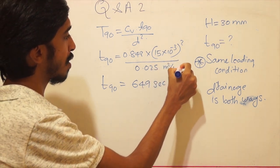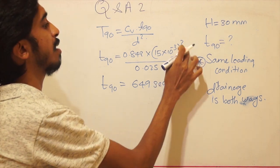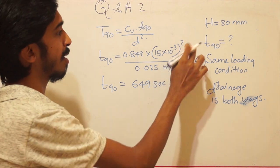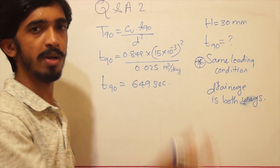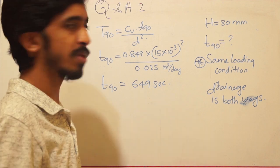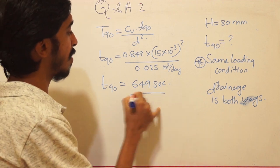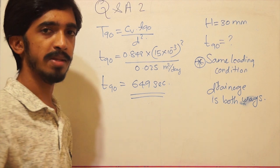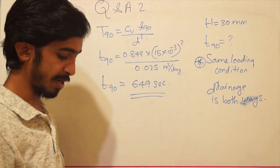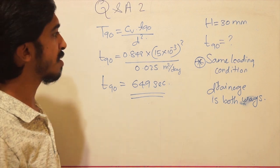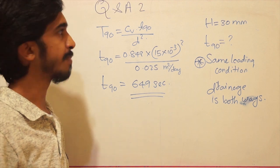The unit conversion is straightforward: cv is in m²/day and 1 day = 86,400 seconds, so converting automatically yields the time in seconds. The answer is t90 = 649 seconds. This is a fairly simple calculation similar to the previous question.